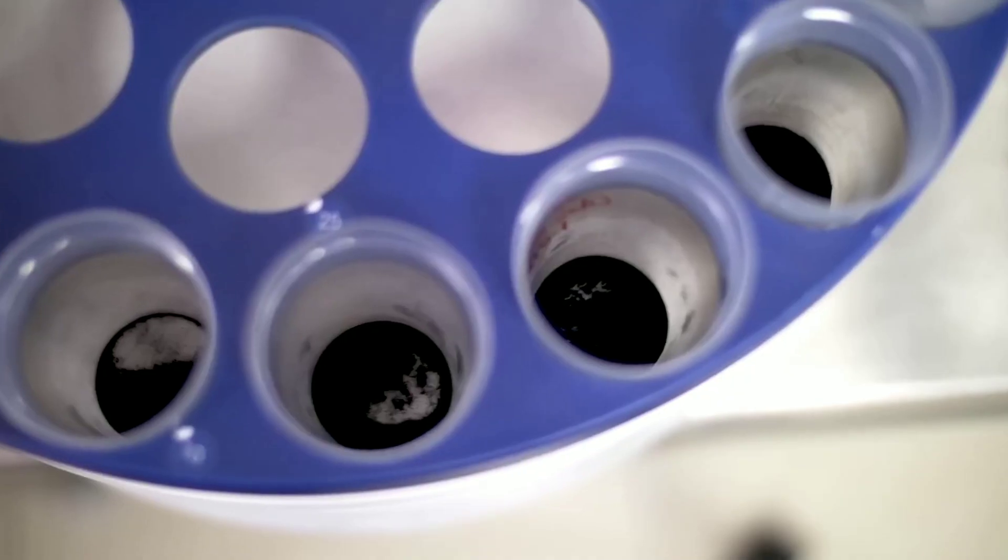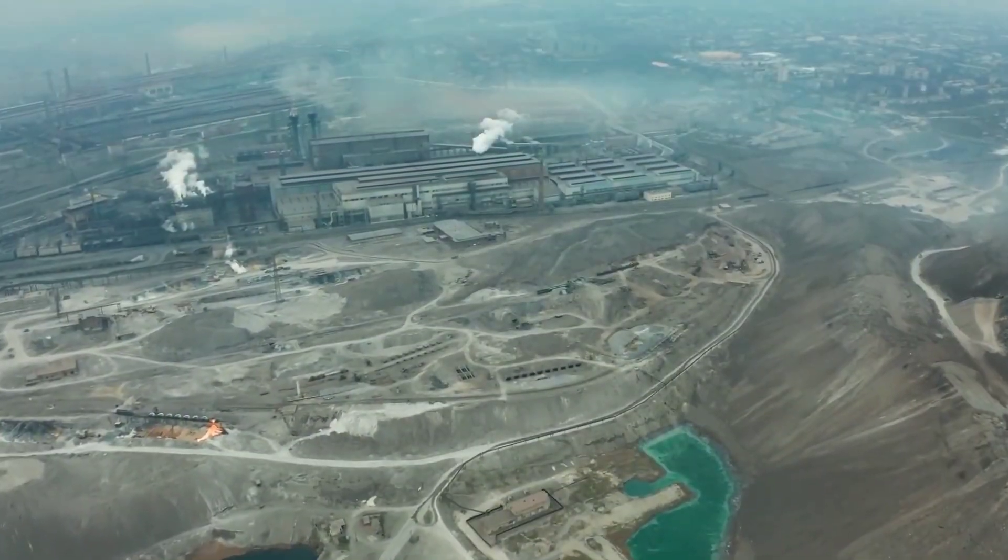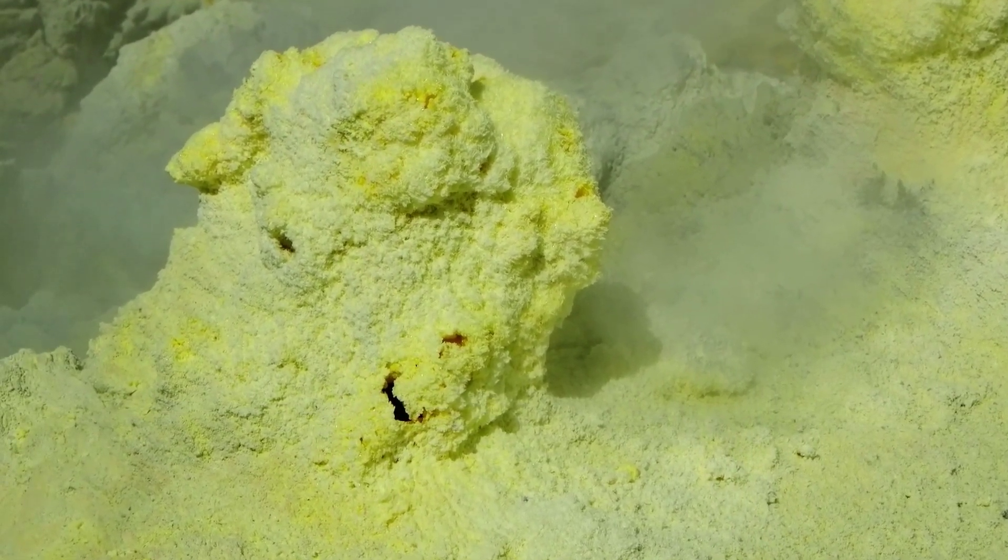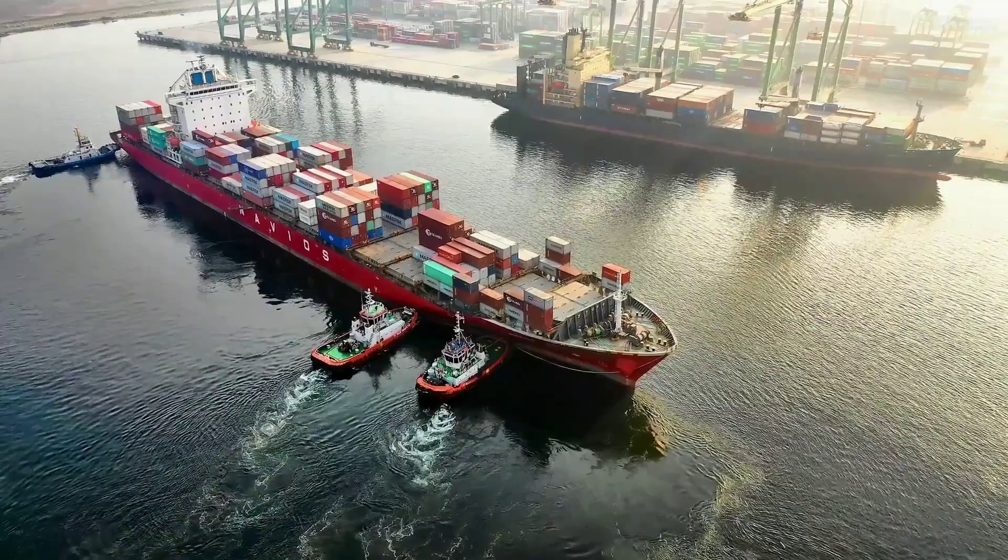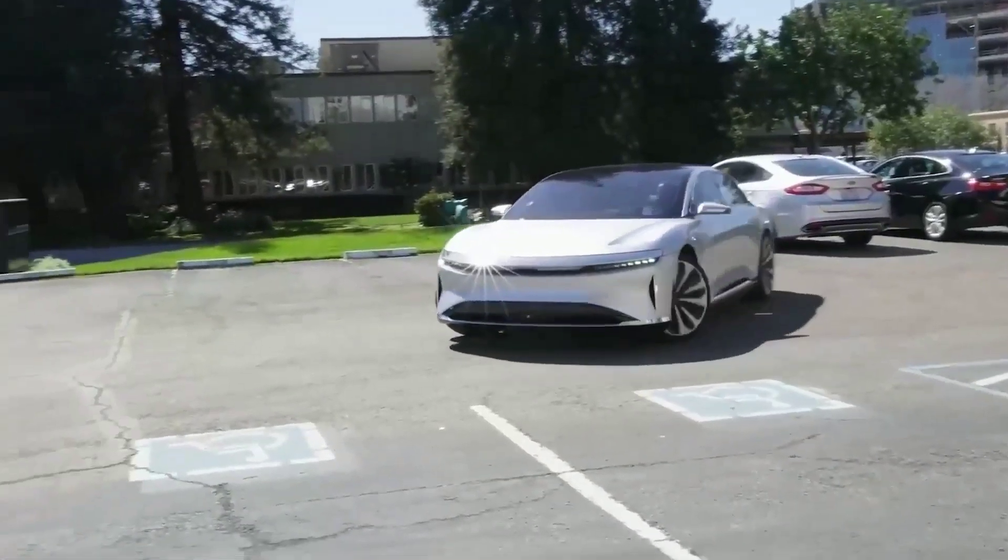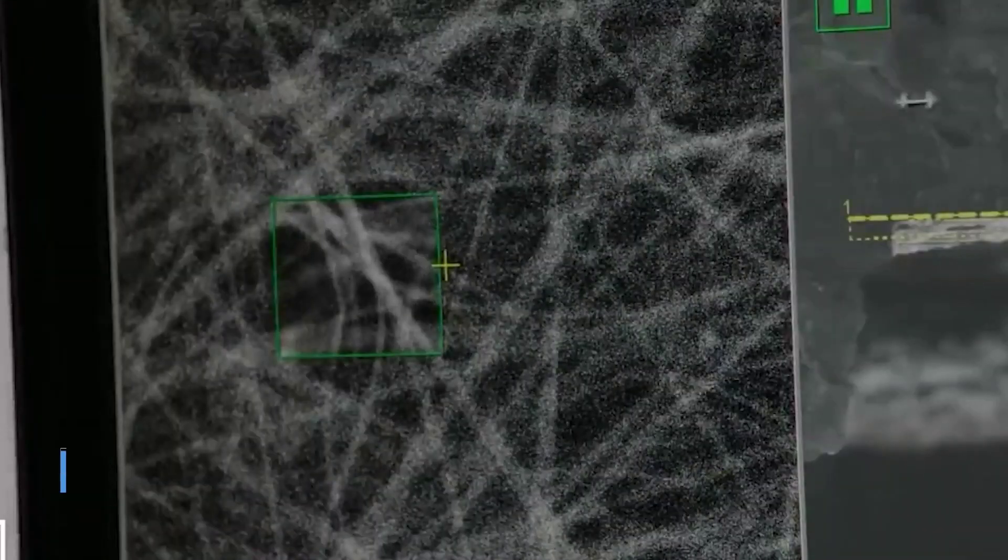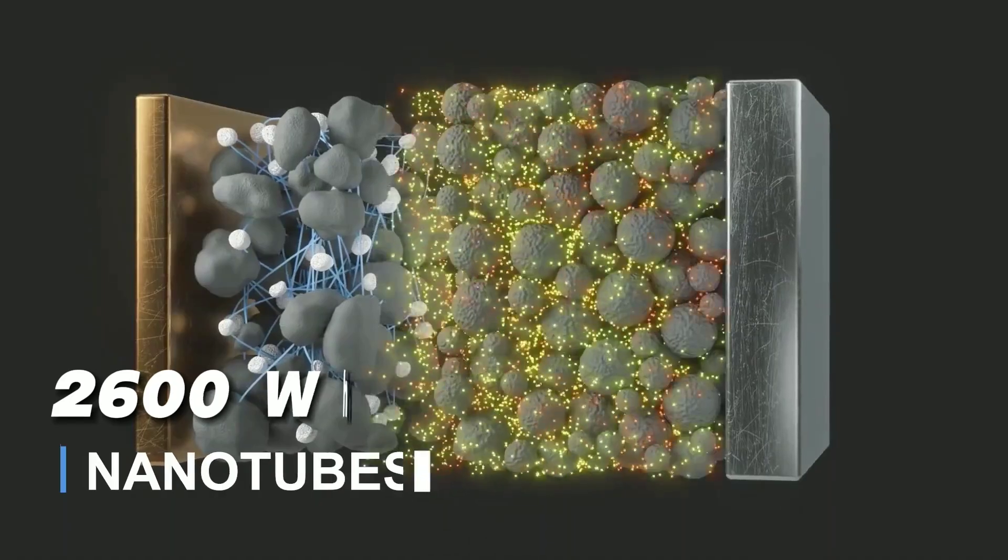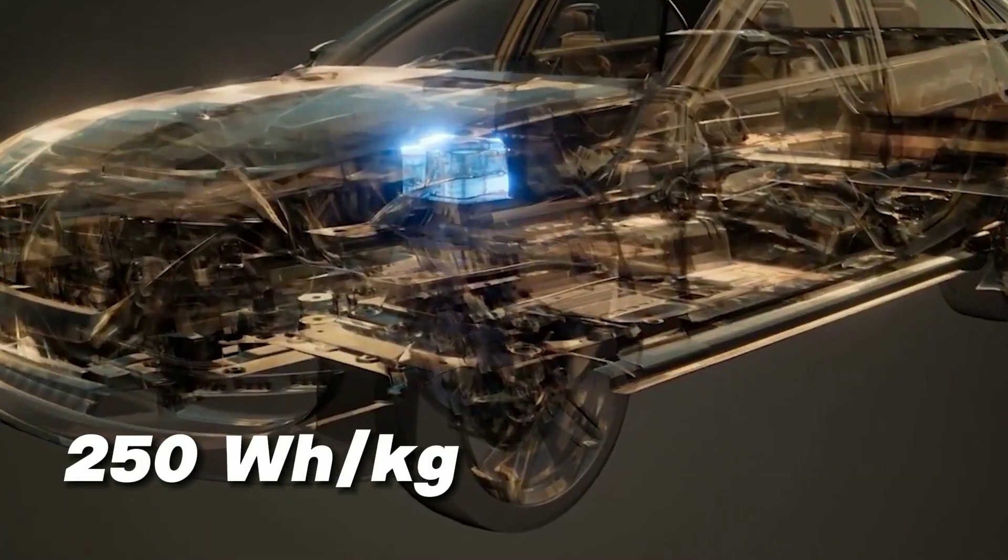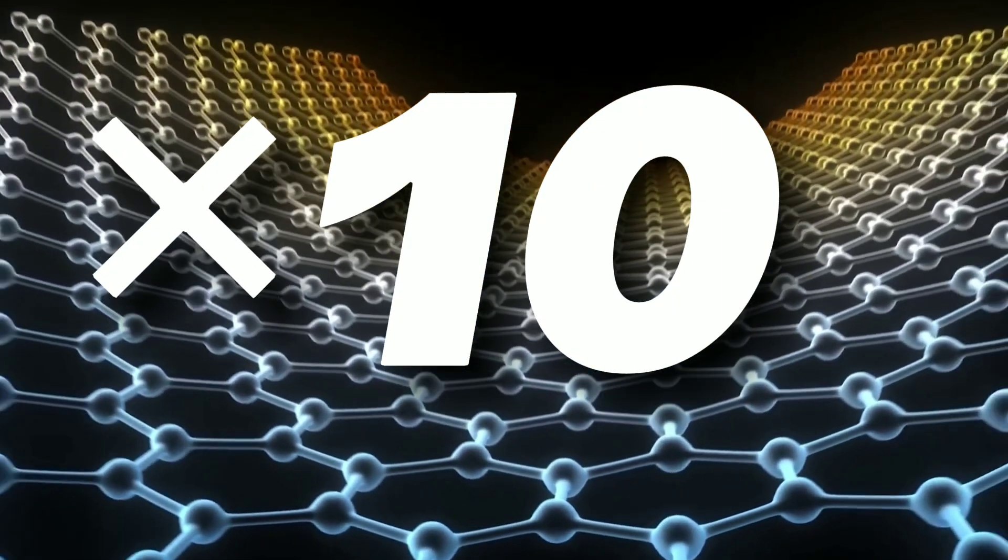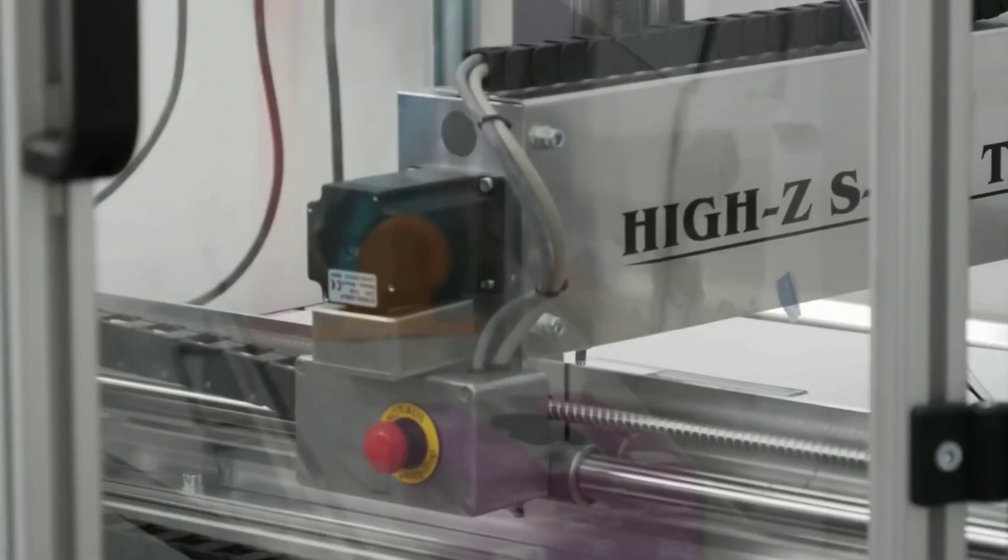Lithium-sulfur batteries use lithium metal as the anode and sulfur as the cathode. Both lithium and sulfur are abundant and cheap elements that can be sourced locally in North America or Europe. This means that lithium-sulfur batteries can reduce the dependence on foreign imports and lower the carbon footprint of EV production. Moreover, lithium-sulfur batteries have a much higher theoretical energy density than lithium-ion batteries, up to 2600 watt-hour per kilogram, compared to 250 watt-hour per kilogram. This means that lithium-sulfur batteries can potentially offer more than 10 times more range and performance than lithium-ion batteries with the same weight.